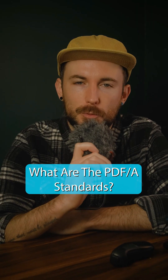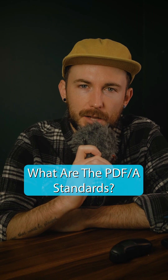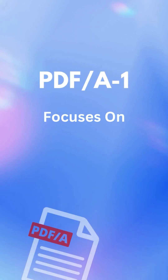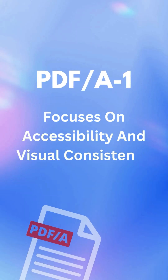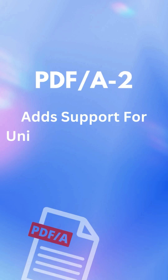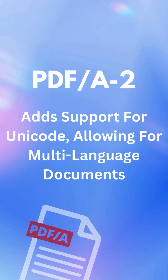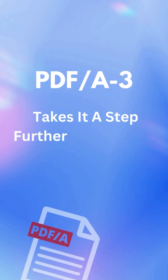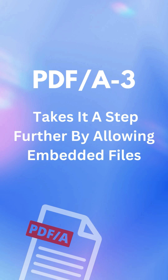Hey everyone, today let's dive into PDF-A standards and exactly what they are. PDF-A has three main versions: PDF-A1, PDF-A2, and PDF-A3. Each serves a unique purpose. PDF-A1 focuses on accessibility and visual consistency, while PDF-A2 adds support for Unicode, allowing for multi-language documents. PDF-A3 takes it a step further by allowing embedded files.